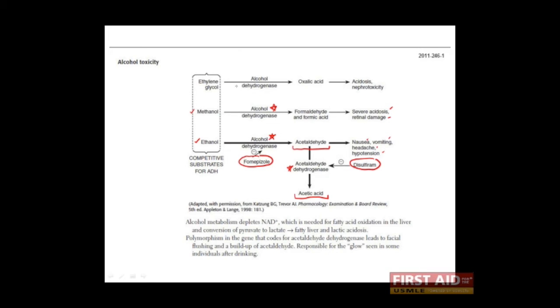Someone who has drunk methanol can actually be given ethanol as an antidote because ethanol outcompetes methanol in the alcohol dehydrogenase step. Thus, acetaldehyde and later acetic acid are preferentially formed over formaldehyde and formic acid, preventing the severe acidosis and retinal damage seen with formaldehyde and formic acid toxicity.